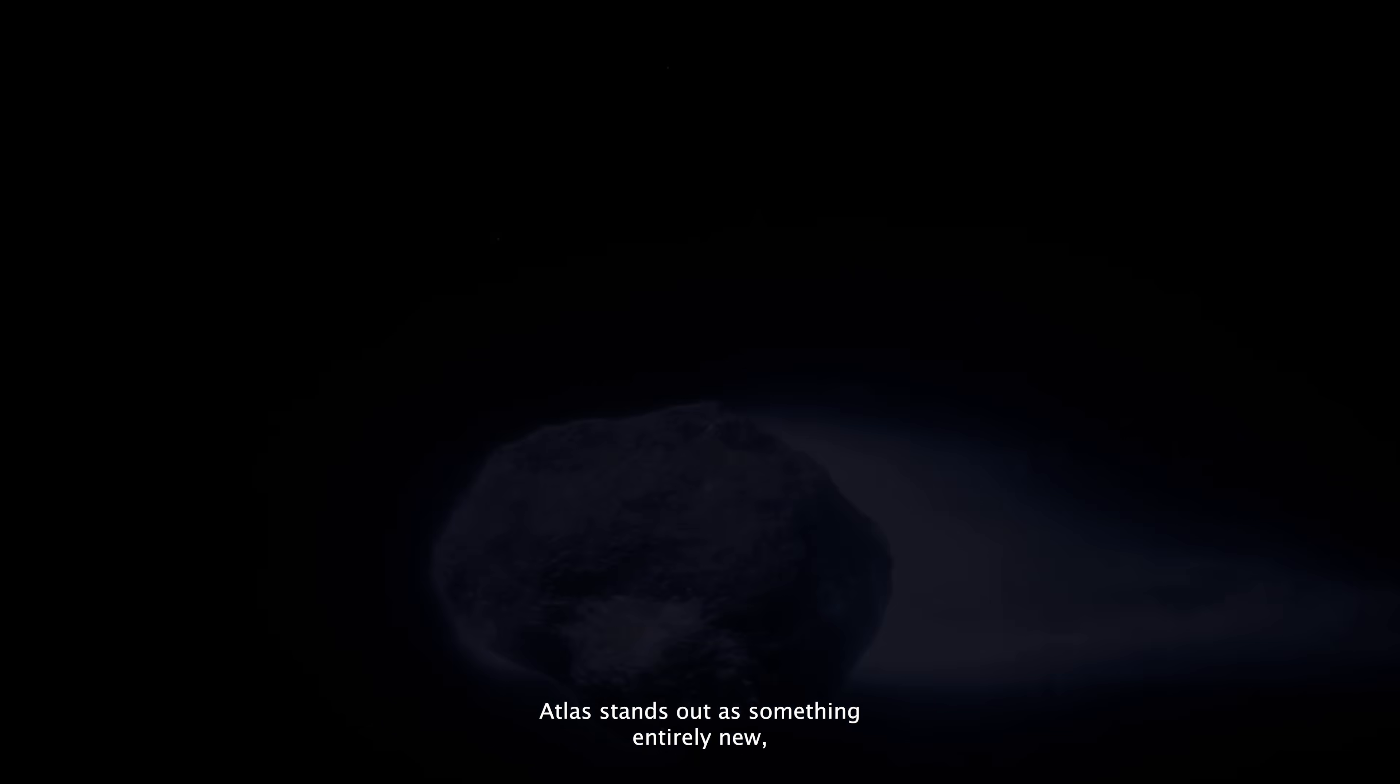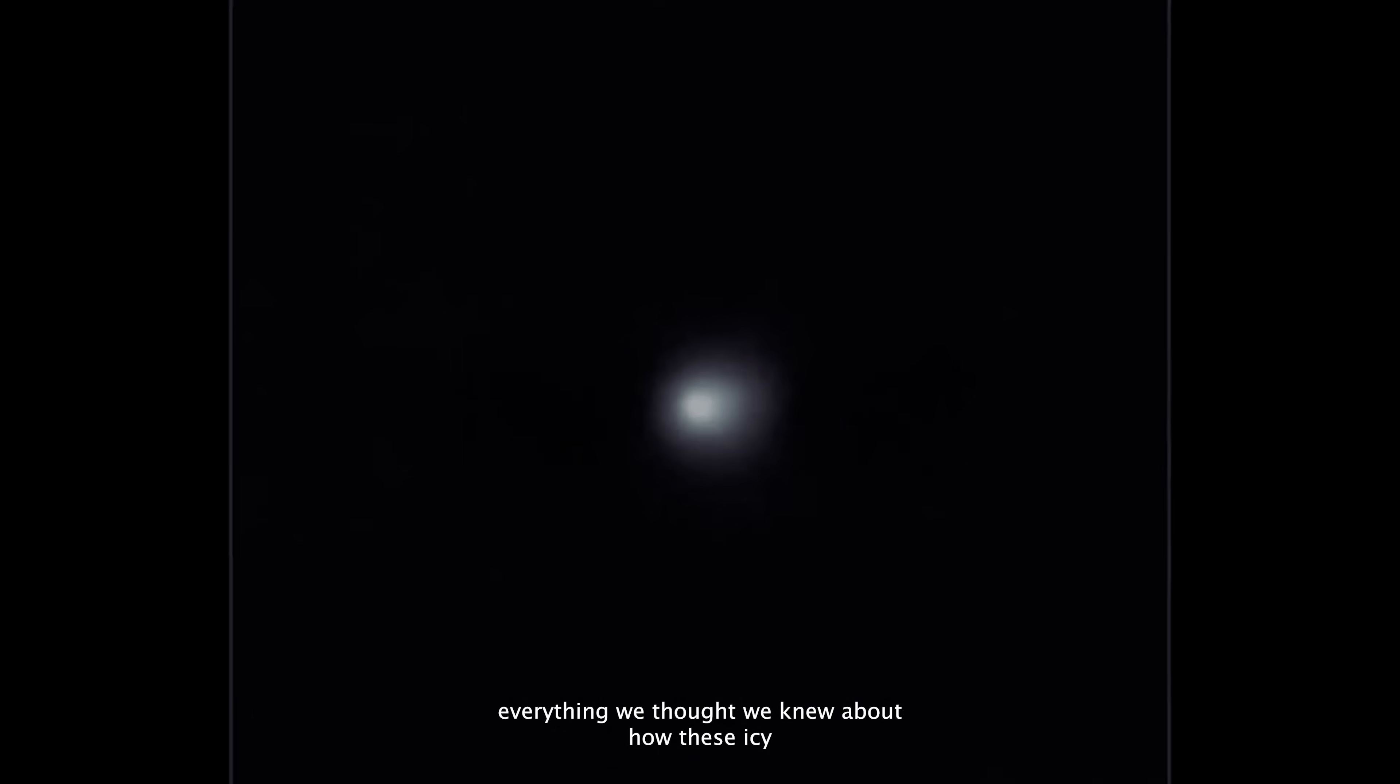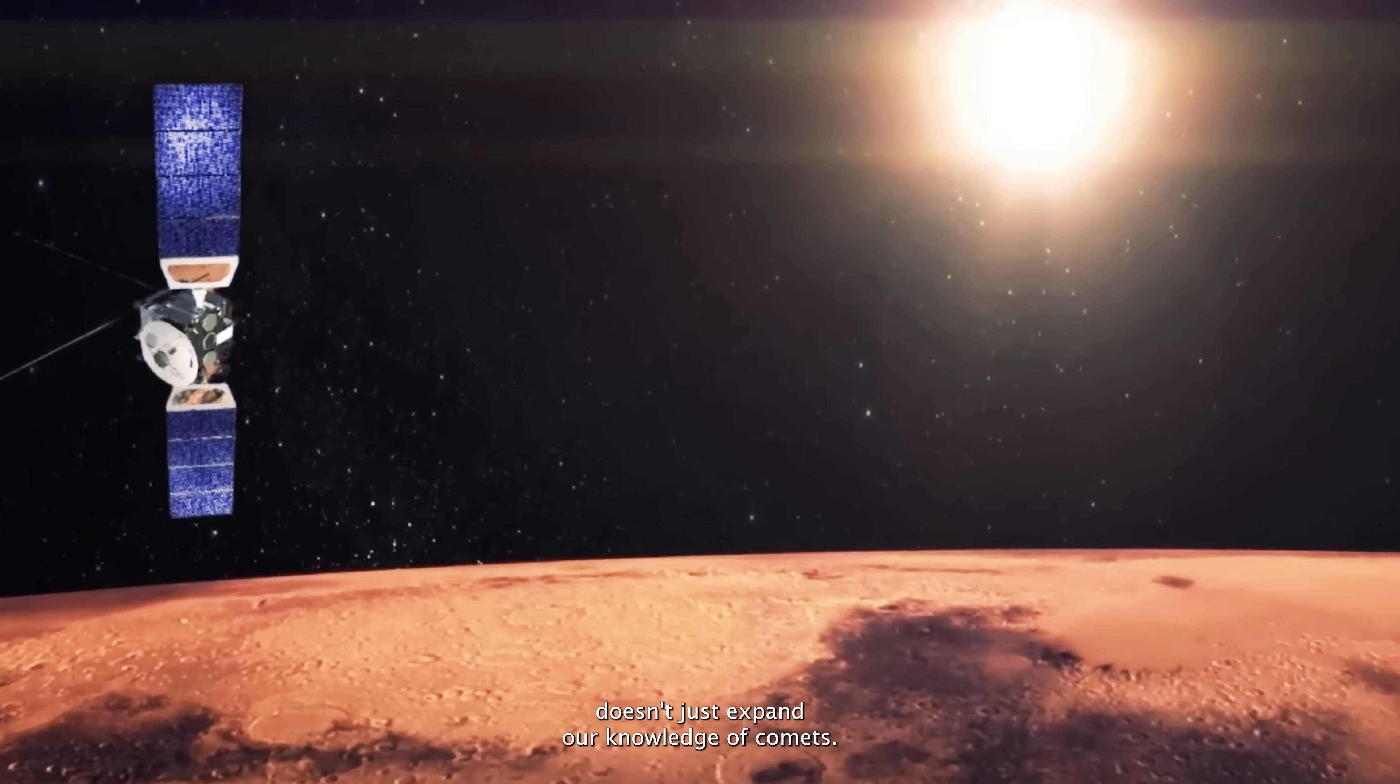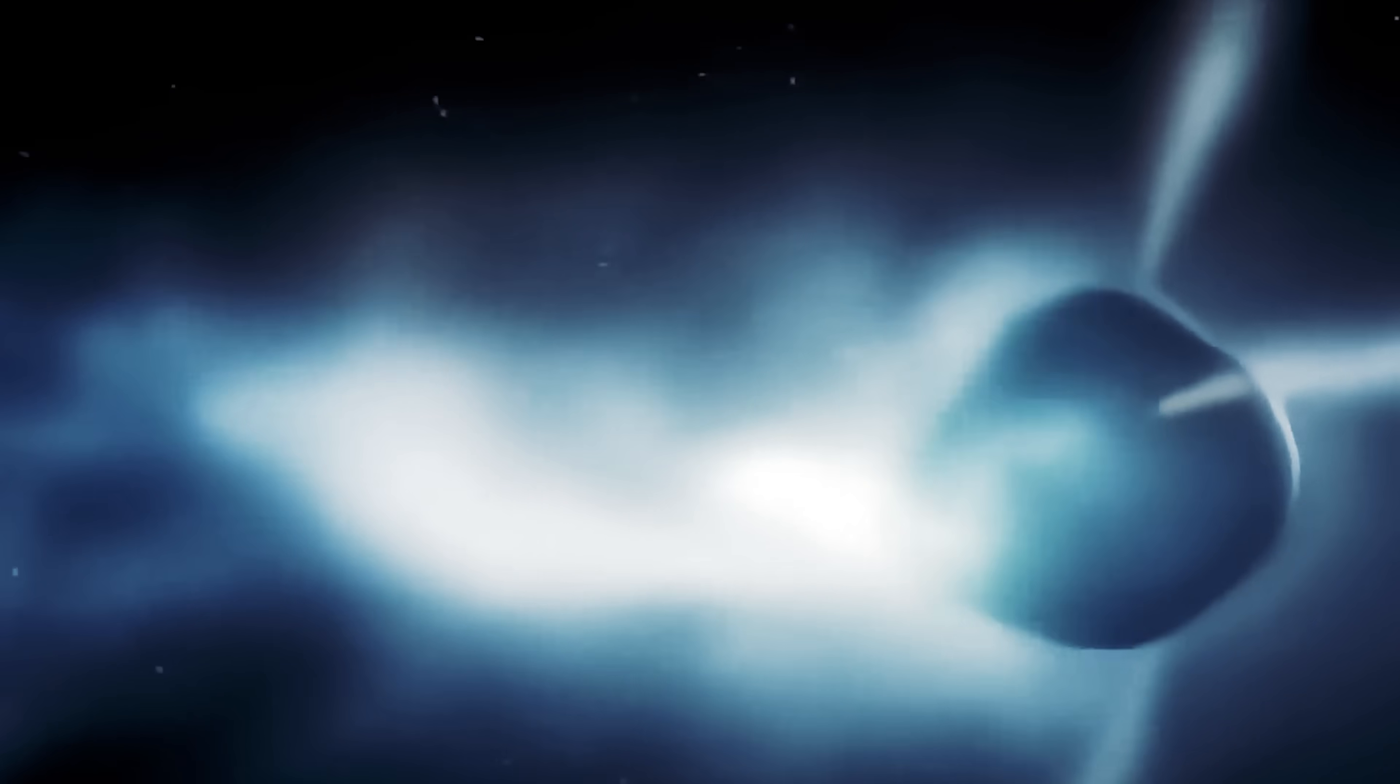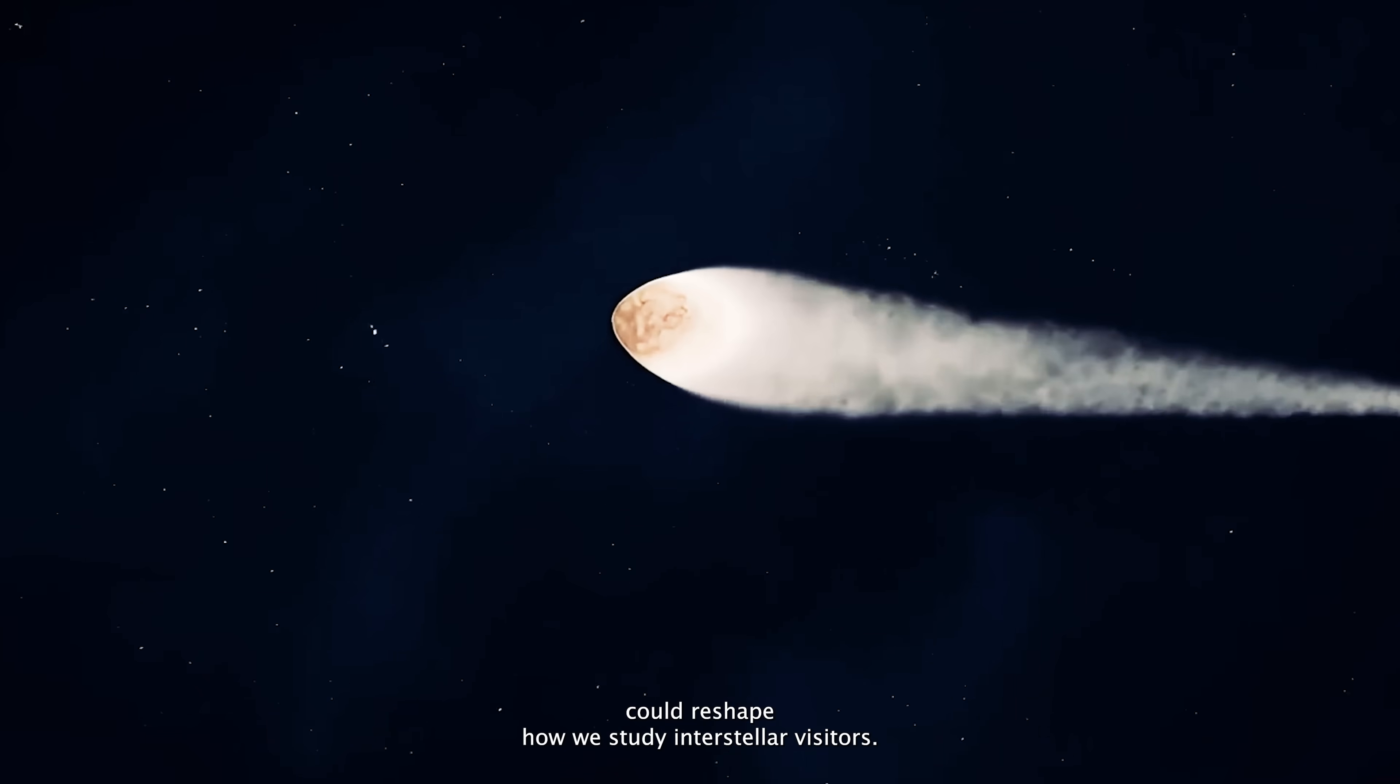3i Atlas stands out as something entirely new, a comet that defies our expectations and challenges everything we thought we knew about how these icy wanderers behave. Each discovery it offers doesn't just expand our knowledge of comets, it rewrites our understanding of how the galaxy shares its raw materials across the vastness of space. Its unique chemistry and early activity reveal clues from another star system. What happens at perihelion could reshape how we study interstellar visitors.